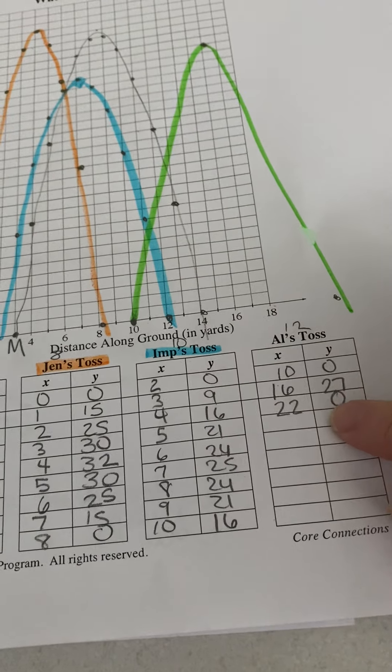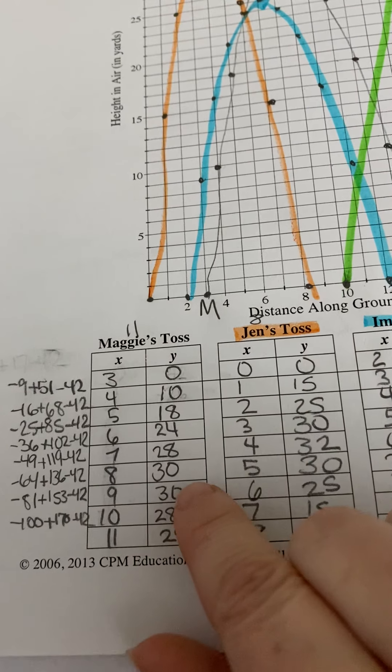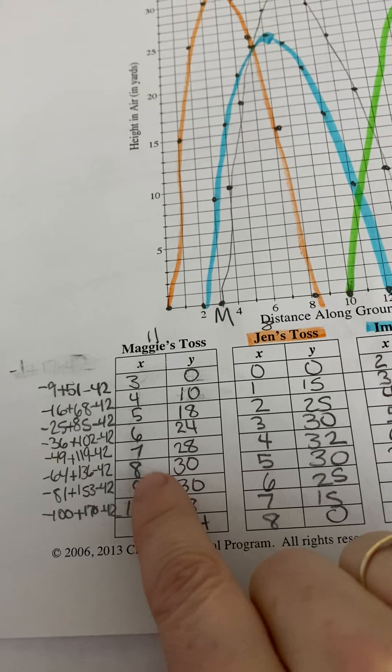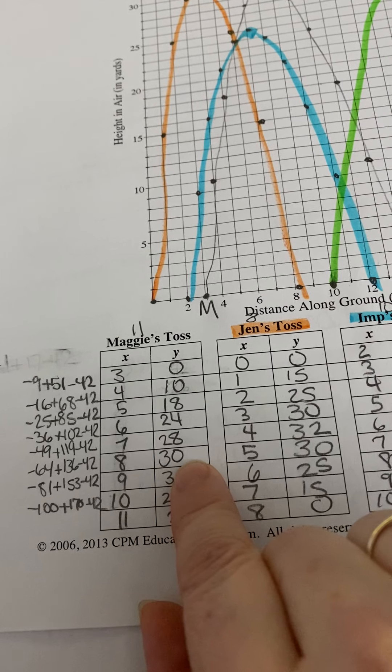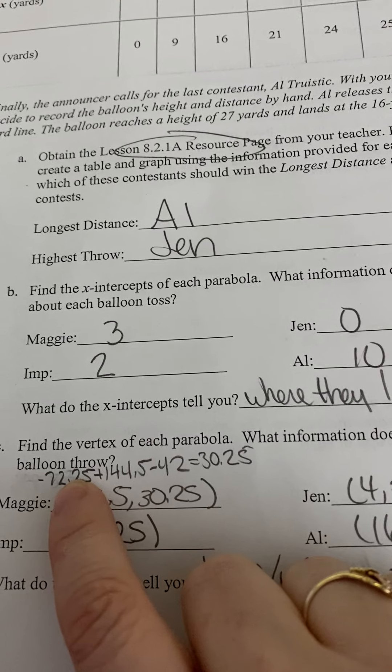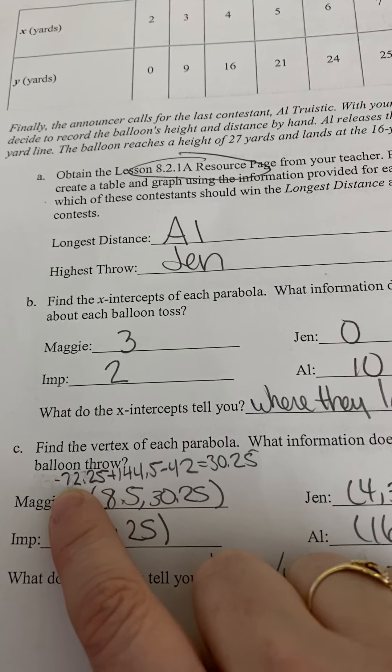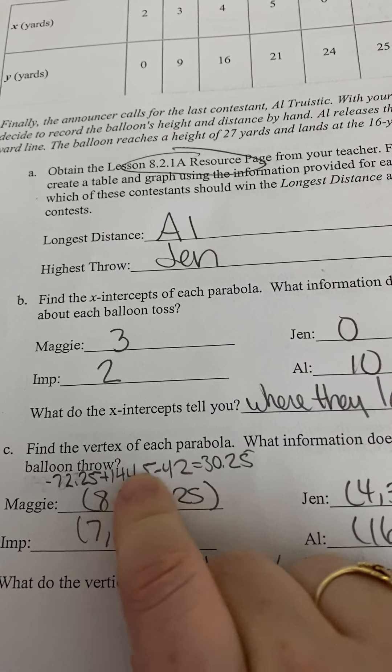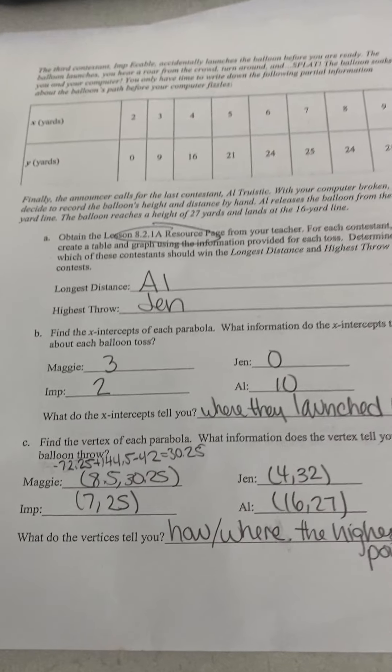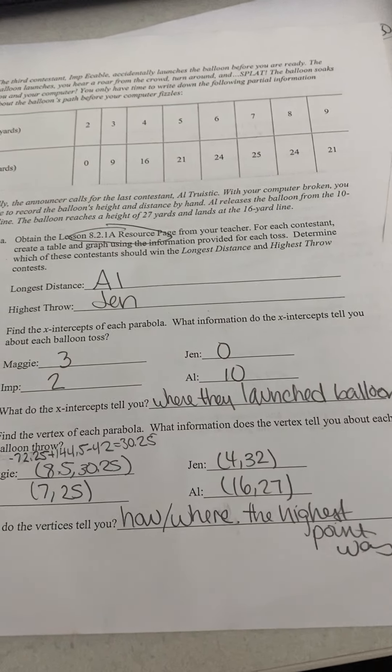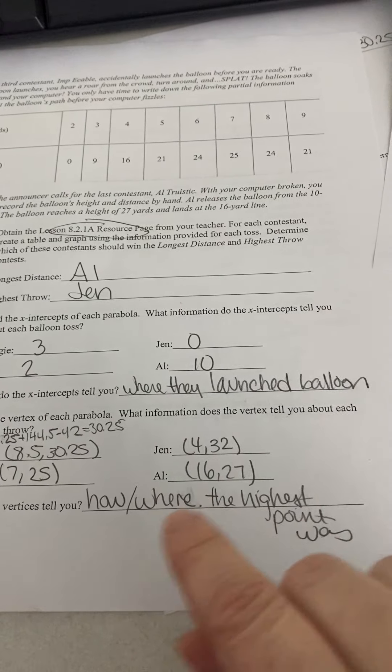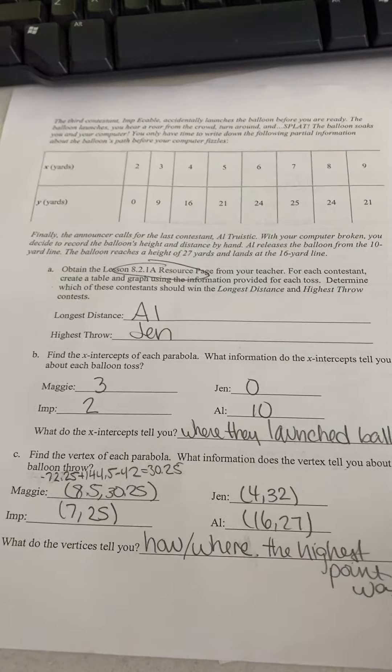This one gets to 27, goes back down. This one is a little trickier because it doesn't just have that place, but you know that it's going to be between 8 and 9, and it's going to have to be halfway between those. So, we know that the vertex, the x value for Maggie, would have to be 8.5. So, you can find that by plugging 8.5 into her equation. So, if you remember, it was negative x squared plus 17x minus 42. So, when you do that with 8.5, you get 30.25. And so, what do the vertices tell you? That is the highest point. And so, how high it was and where and how far away it was when it reached the highest point.